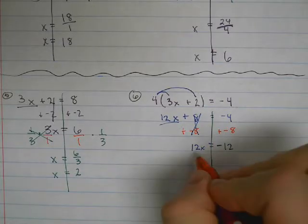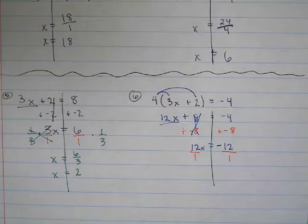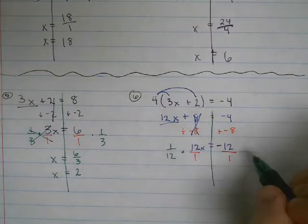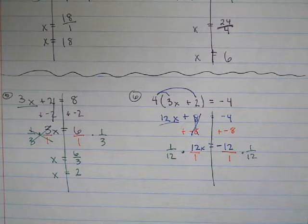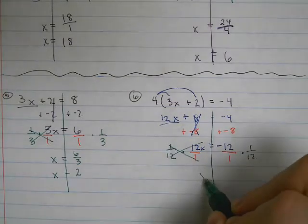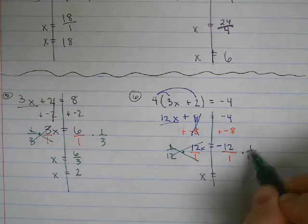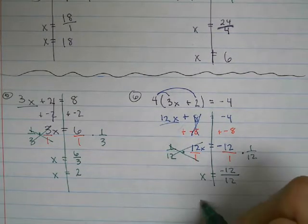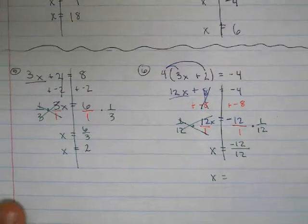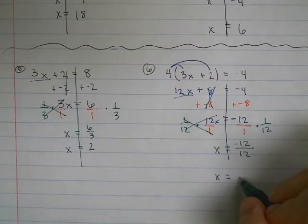We'll write in our hidden ones. Multiplying both sides by the reciprocal. 12 and 1 cancel. We'll have x equals negative 12 over 12. Simplifying, negative 12 divided by 12 is negative 1.